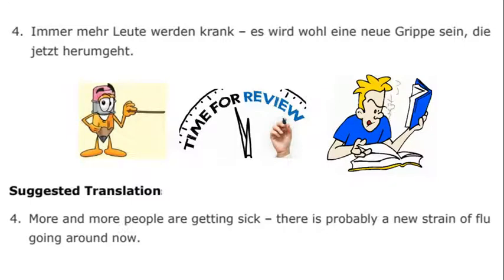More and more people are getting sick. There's probably a new strain of flu going around now. Think very carefully about the verb werden that you see in these sentences. The eighth unit was dedicated to werden because the question of what werden means in English — well, a lot of things depending on context. Here we have the standard werden in isolation, which simply means to become. Immer mehr Leute werden krank: more and more people are becoming sick.